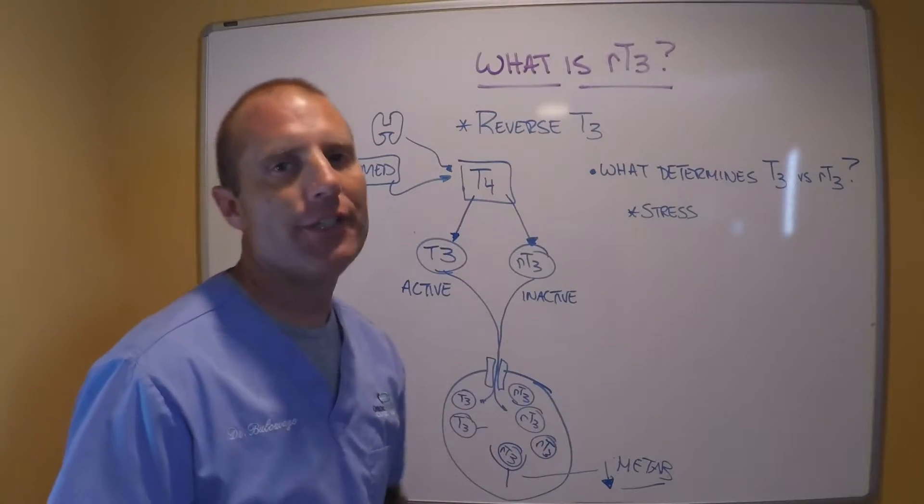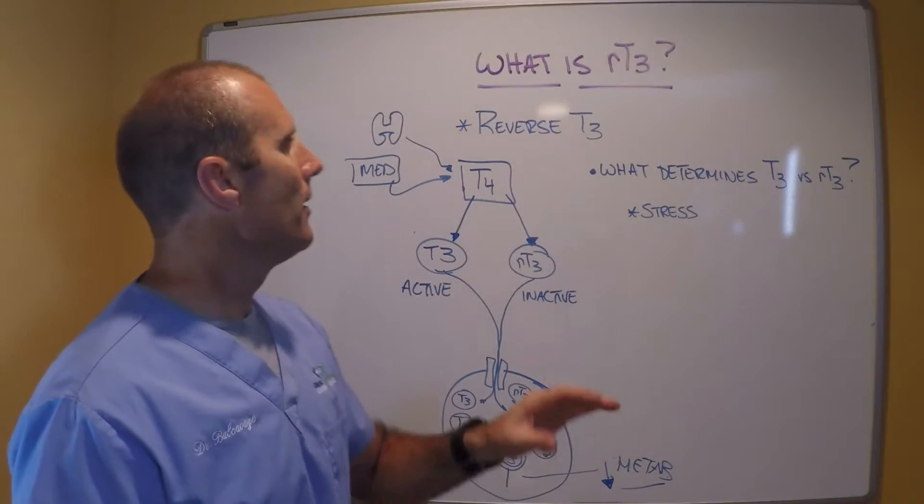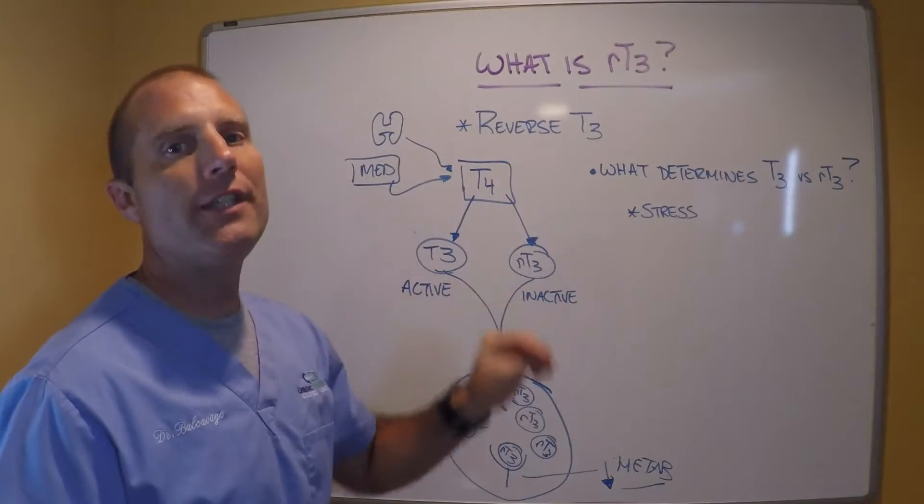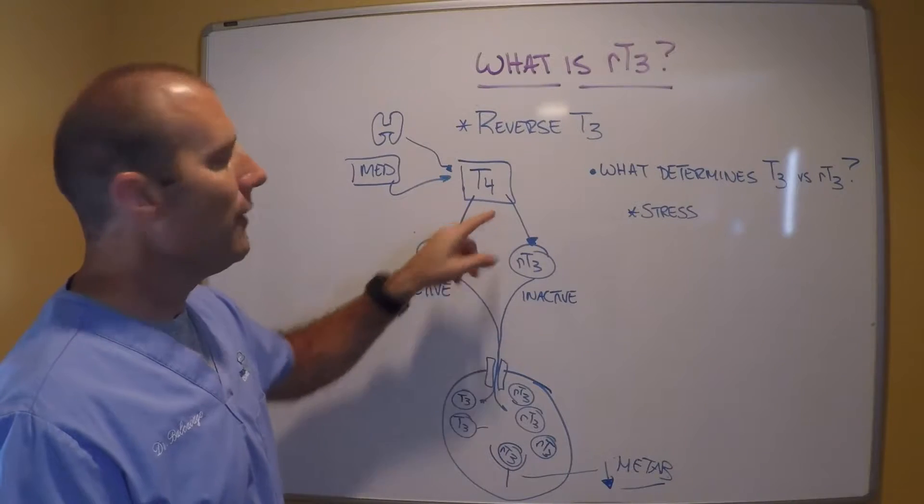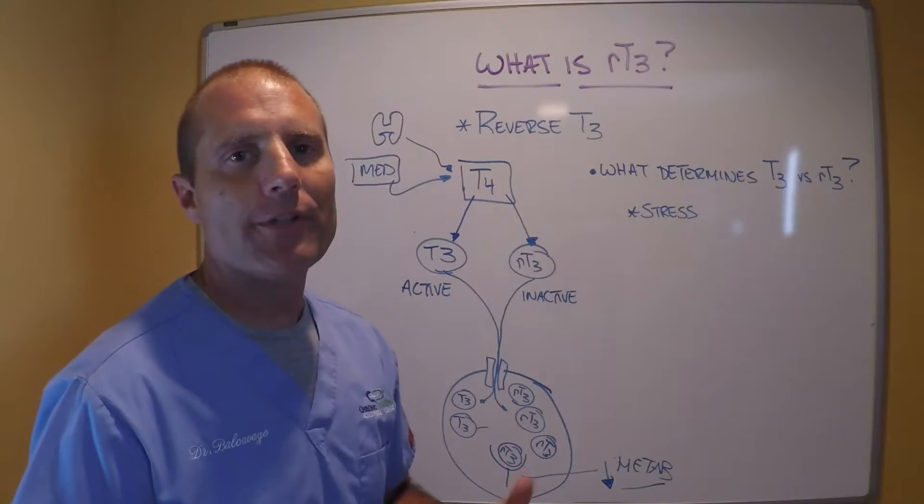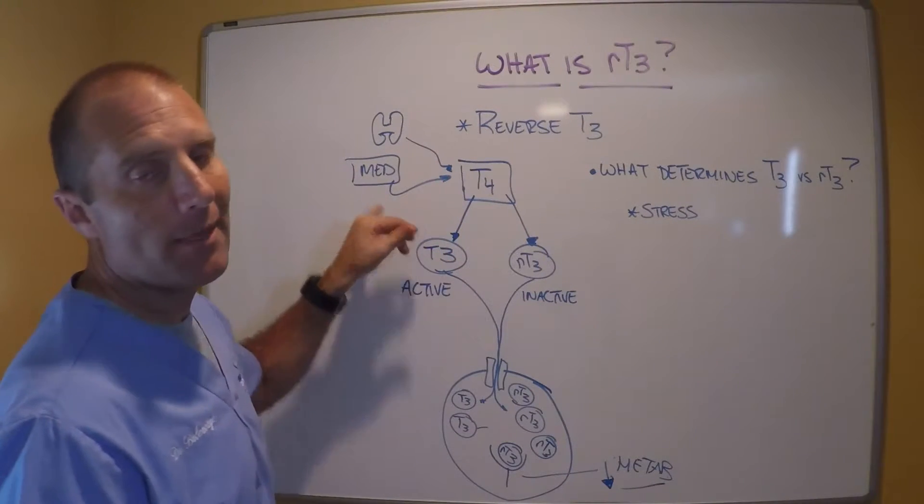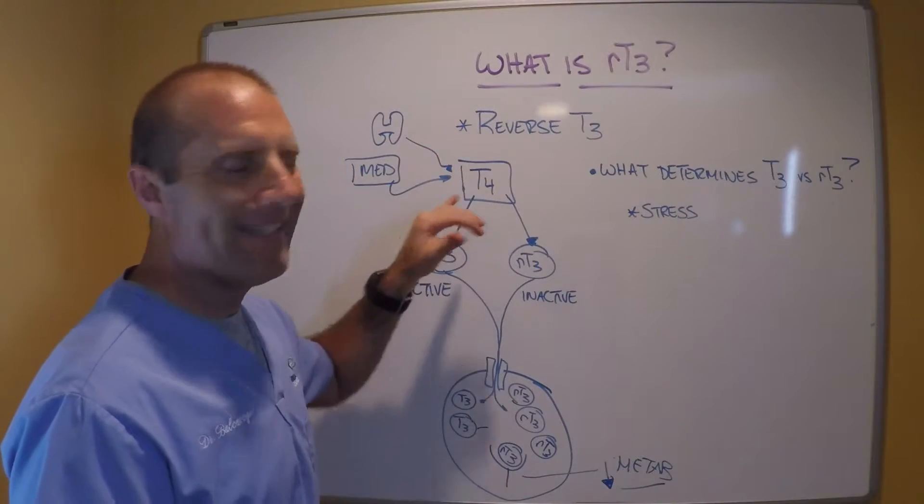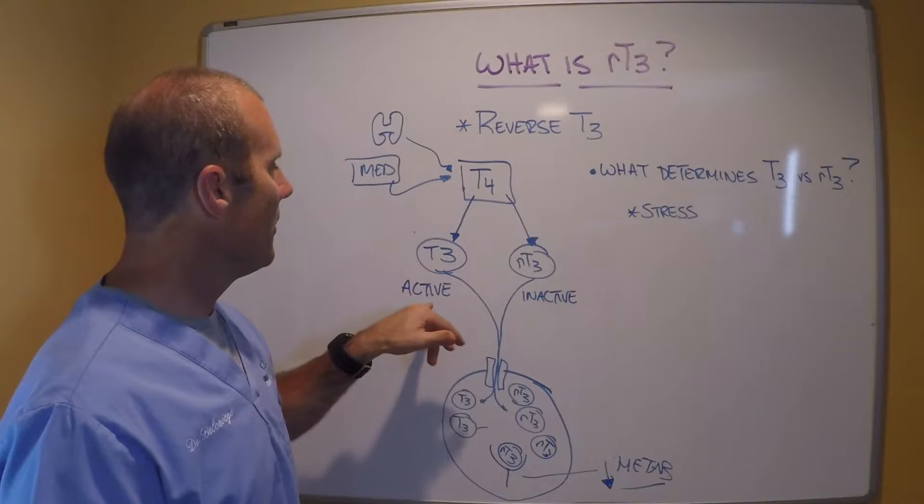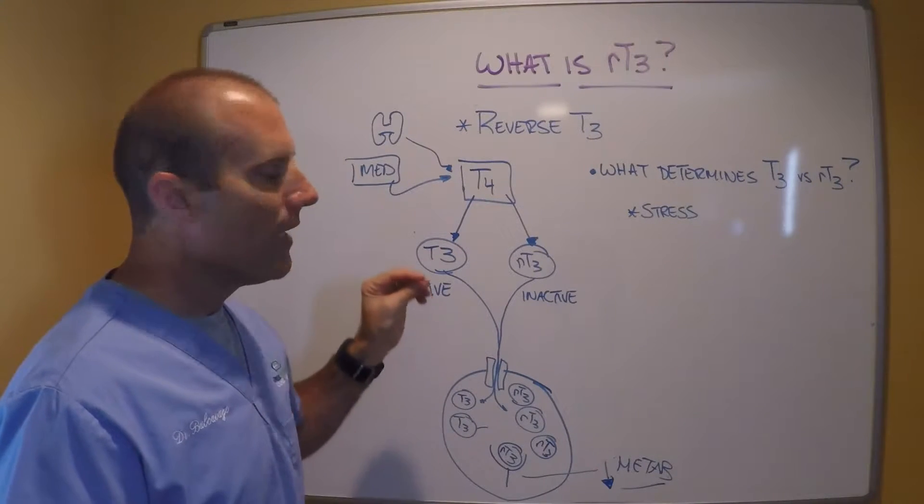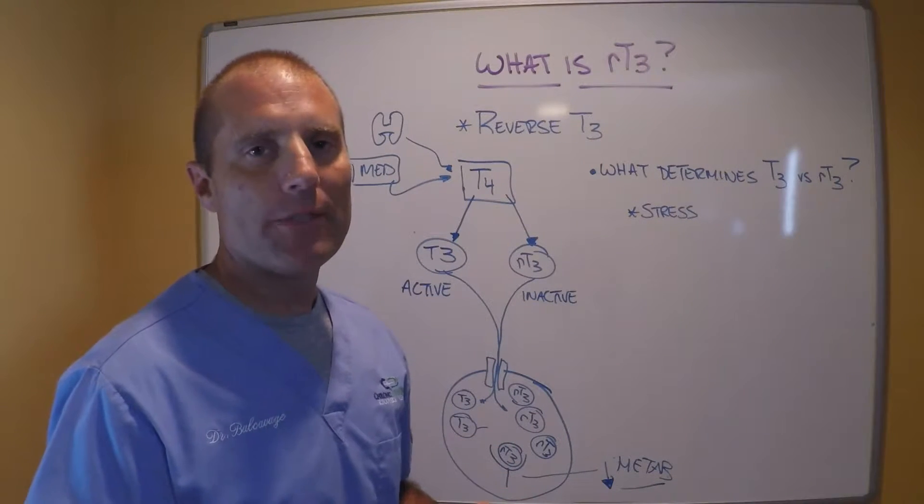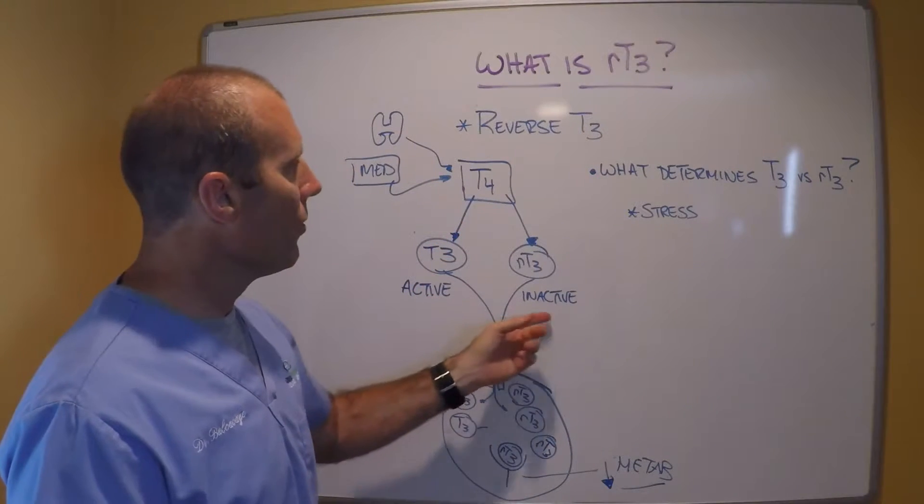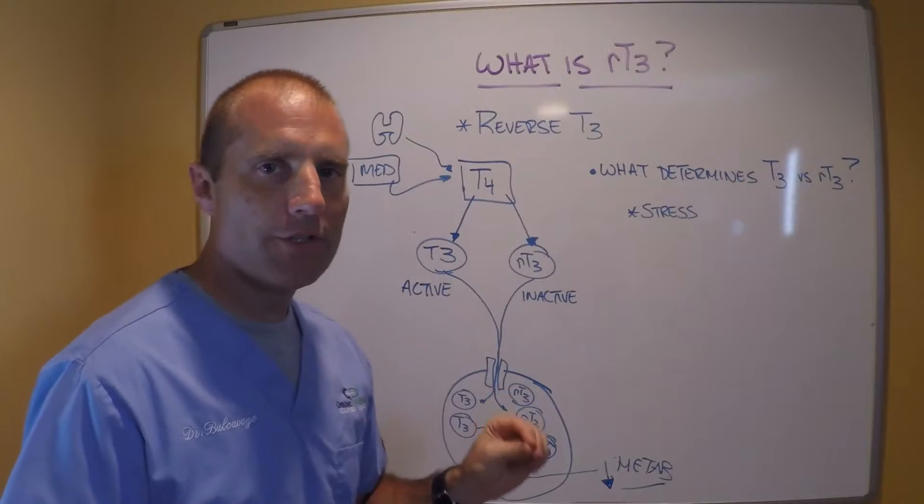Last week I talked about reverse T3, and I explained that reverse T3 is just an inactive form of T3. We said that T4 is the primary hormone that the thyroid gland makes. Most people who are getting medications are getting T4 medication, and T4 is inactive, needs to be converted into an active T3 if we're going to stimulate or increase metabolism.